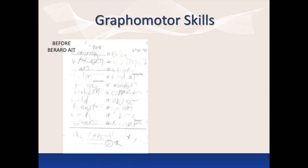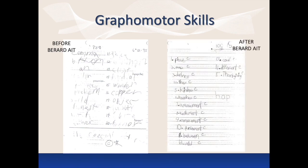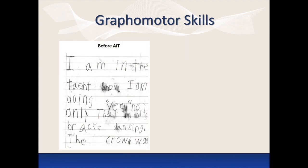Before Berard AIT, this boy's ability to grasp and control the pencil was very weak. His letters were large and he struggled to stay on the lines. A short time after completing Berard AIT, the boy's grasp control significantly improved. He is able to write with smaller letters and they are placed more accurately on the lines. This seven-year-old boy enjoyed writing about his experiences.